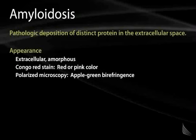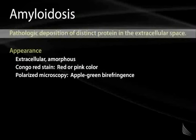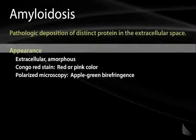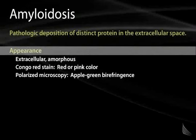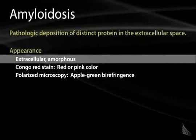Amyloidosis is a generic term that refers to a variety of conditions characterized by the pathologic deposition of a particular protein, known as amyloid, in the extracellular space. The appearance, histologically, is of an amorphous, often pink appearing protein that is deposited in the extracellular space.